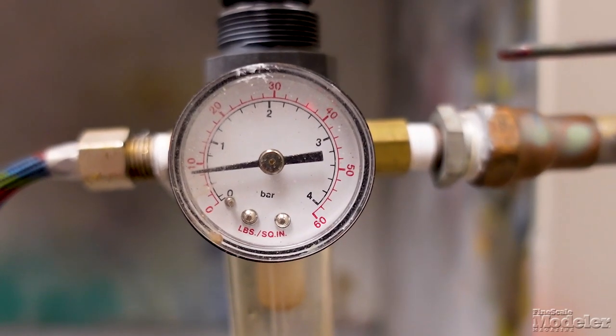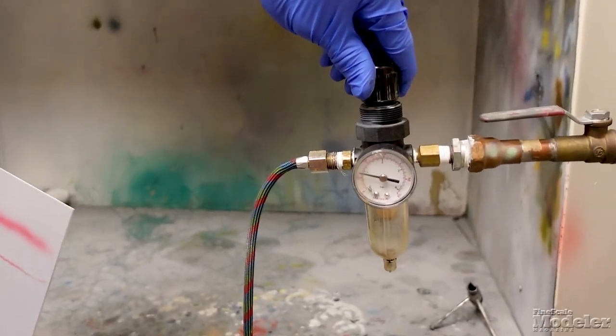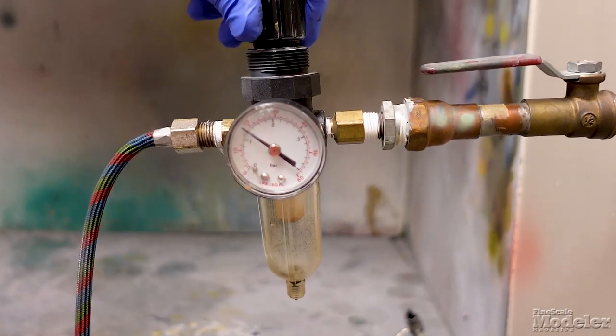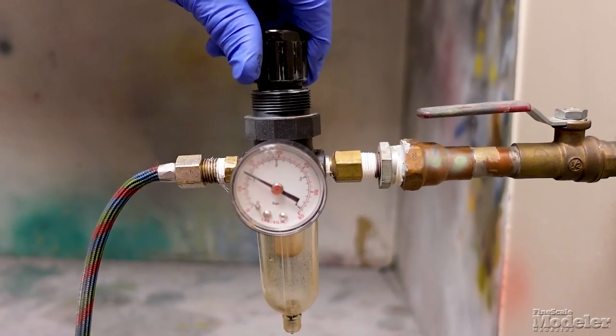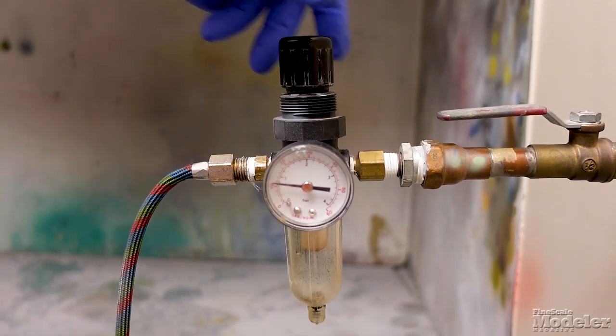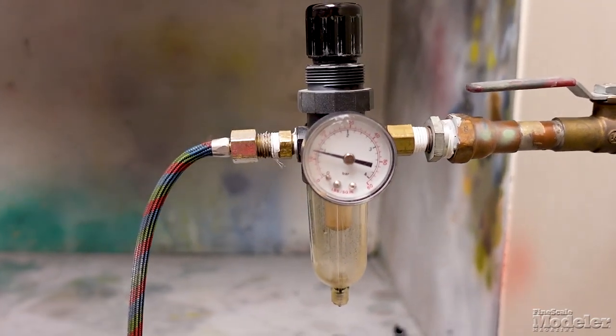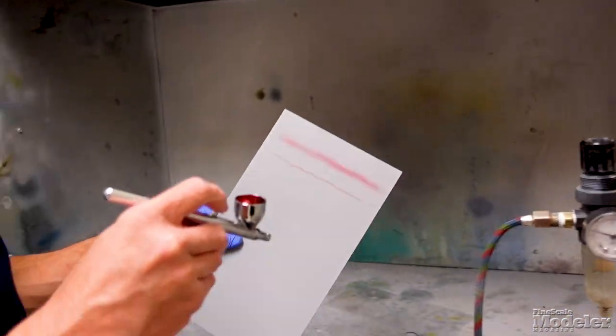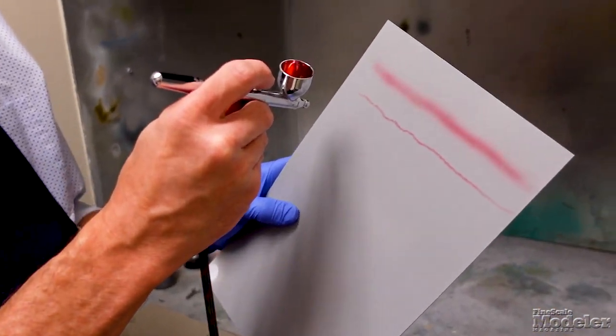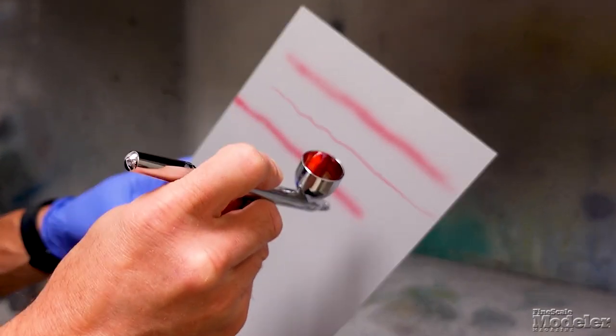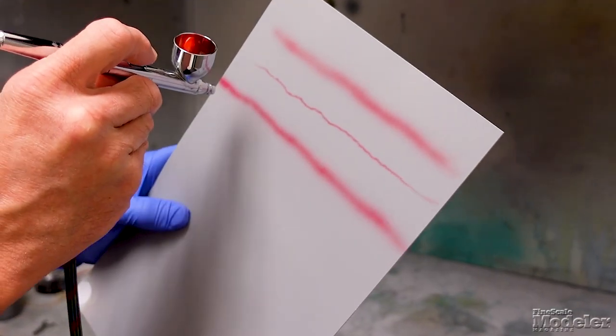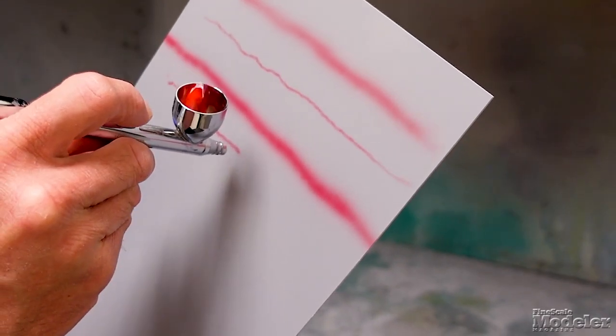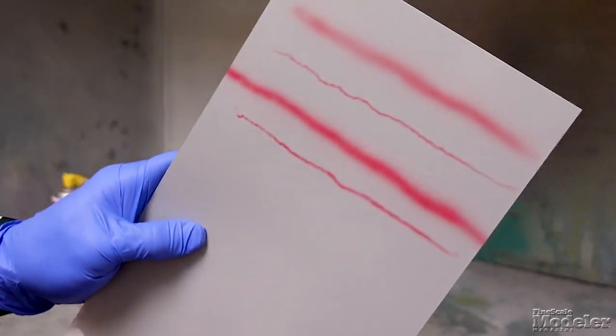So let's dial this up to a common pressure for certain types of paint, 12 to 15. Okay, so this should atomize the paint a little better. I'm going to pull a line. Still a bit fuzzy, but I can still get in pretty close and get a fairly tight line.